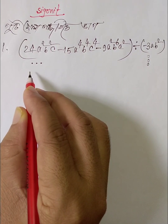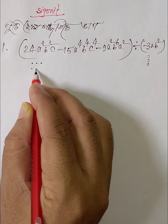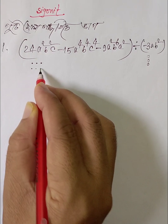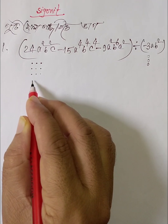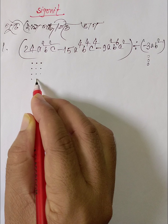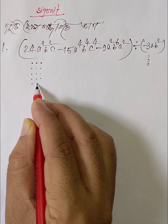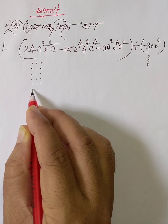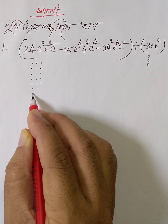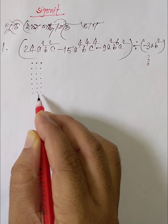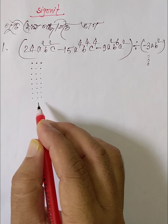Now let's form groups from the table. Grouping: 6, 9, 12, 15, 18, 21, then 24. Right.